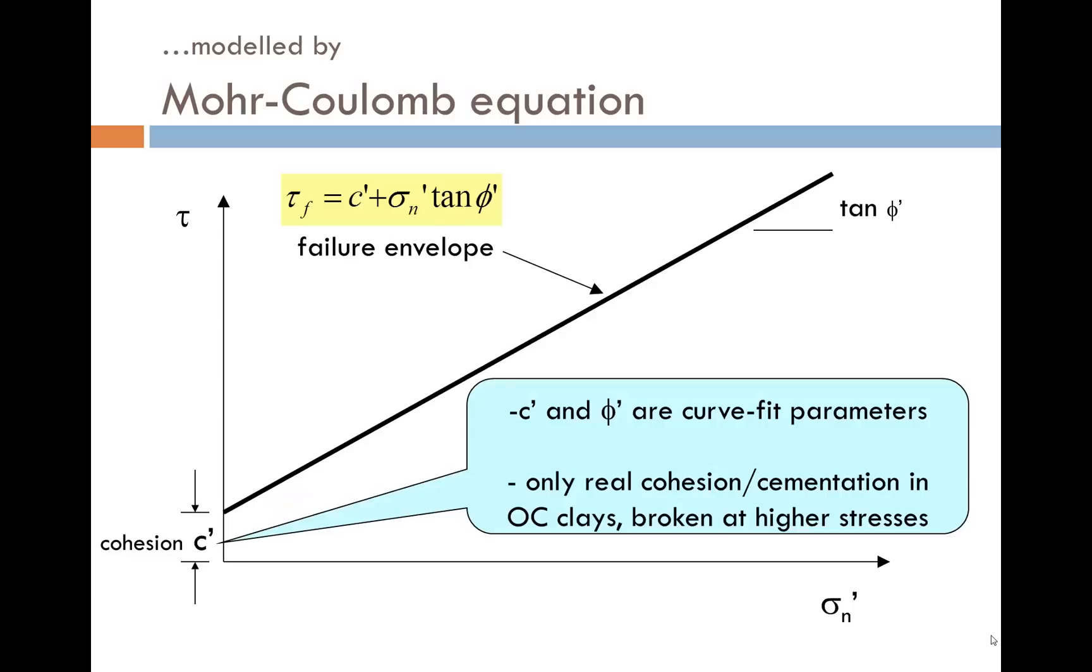This behaviour is conveniently represented in geomechanics by the Mohr-Coulomb equation: tau f is equal to C dash plus sigma n dash tan phi dash. The intercept C dash and the friction angle phi dash should be seen as curve fit parameters to represent the behaviour of soil over a certain range of normal stresses.